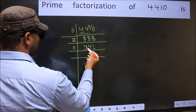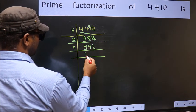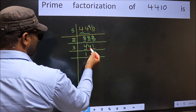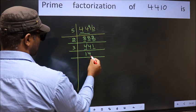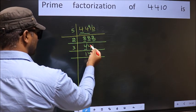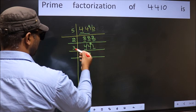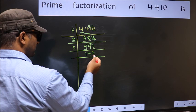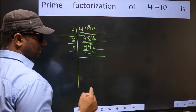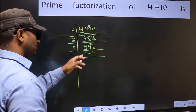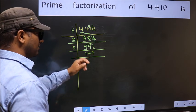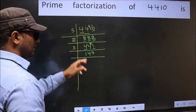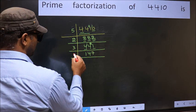First number 4; a number close to 4 in the 3 table is 3×1=3. 4 minus 3 is 1, carried forward: 14. A number close to 14 in the 3 table is 3×4=12. 14 minus 12 is 2, carried forward: 21. We get 21 in the 3 table as 3×7=21. To check divisibility by 3 again: 1+4+7=12, and 12 is divisible by 3, so take 3.